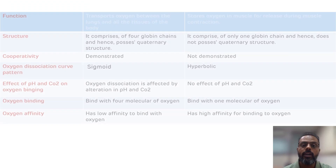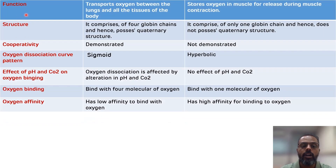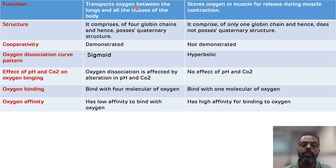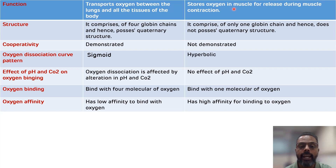The first difference is related to the function of hemoglobin and myoglobin. Hemoglobin plays an important role in the transport of oxygen between the lungs and all other tissues of the body, while myoglobin plays an important role in the storage of oxygen in the muscle, and that oxygen is released during muscle contraction.